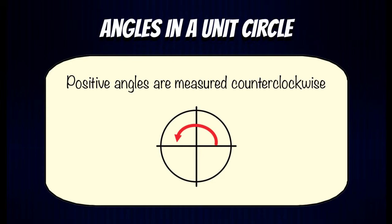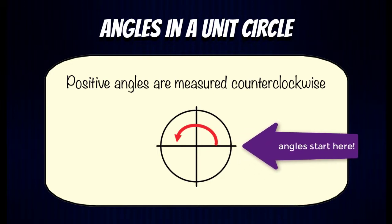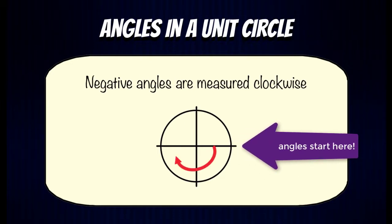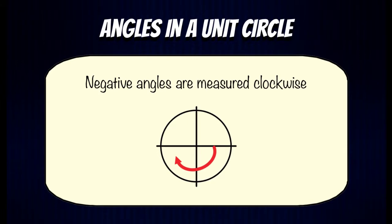Also we need some conventions for angles. Positive angles are measured counterclockwise starting in quadrant one on the x-axis. Negative angles are measured clockwise, but in this video we're only going to be dealing with positive angles.